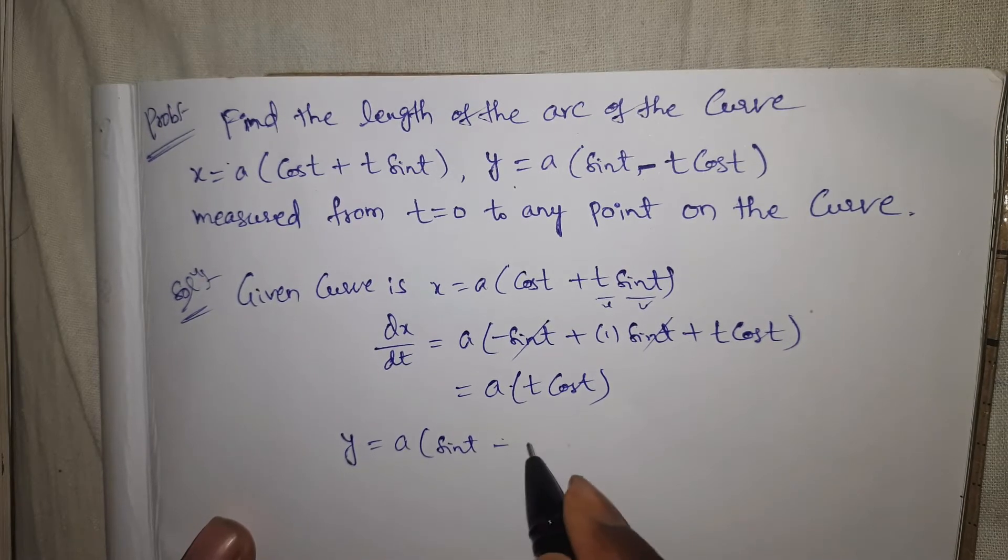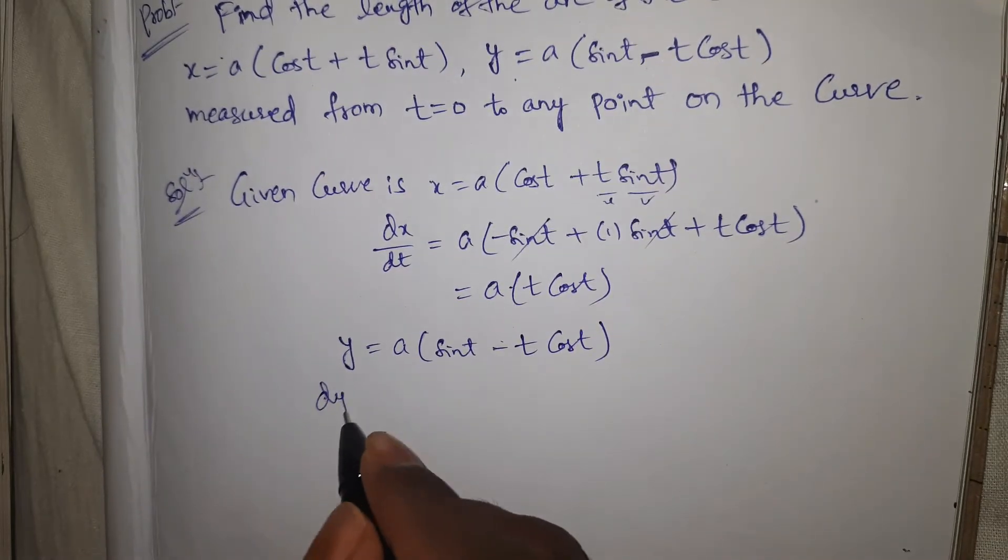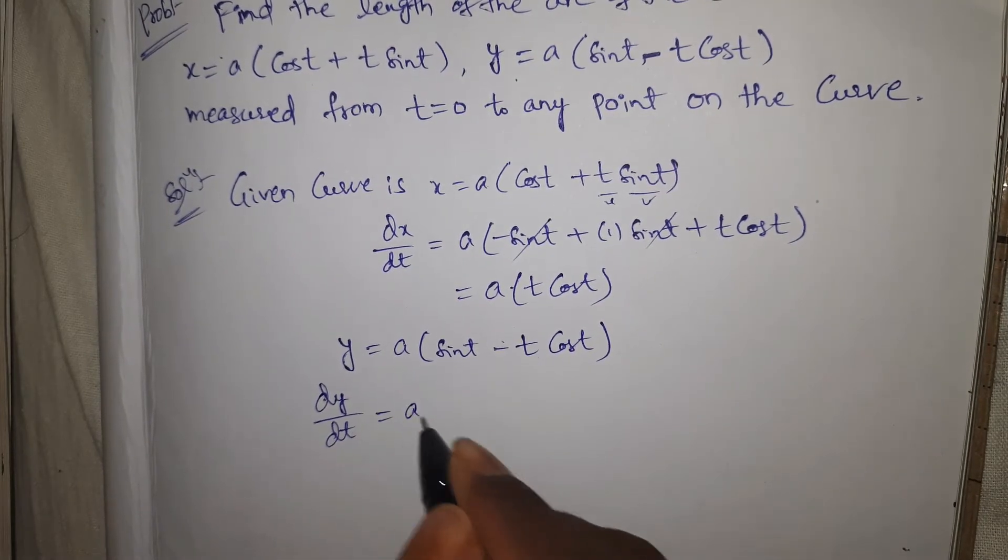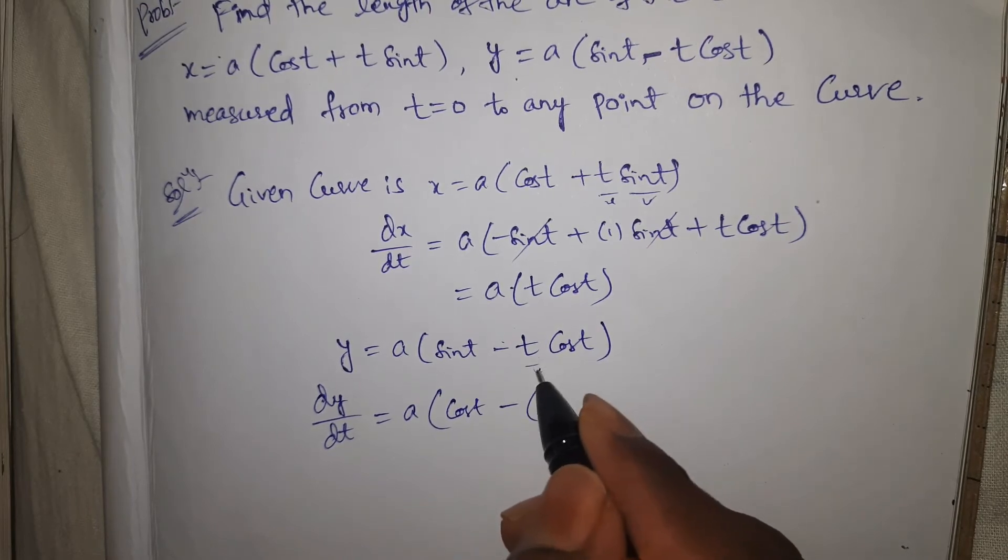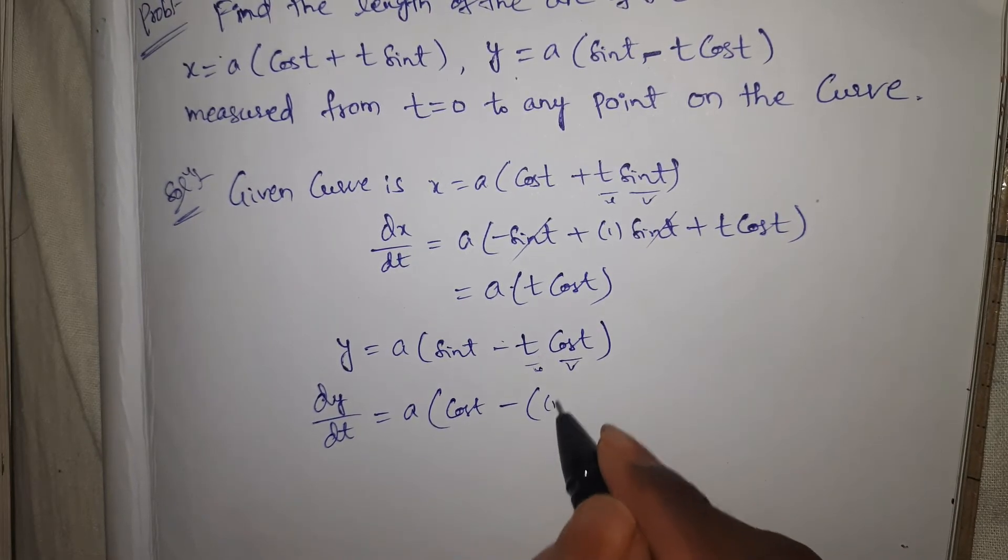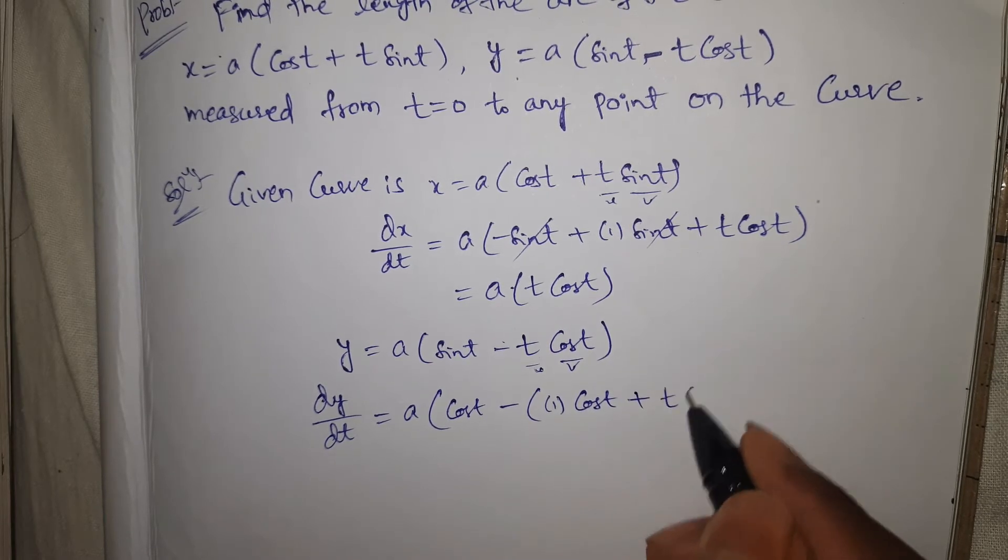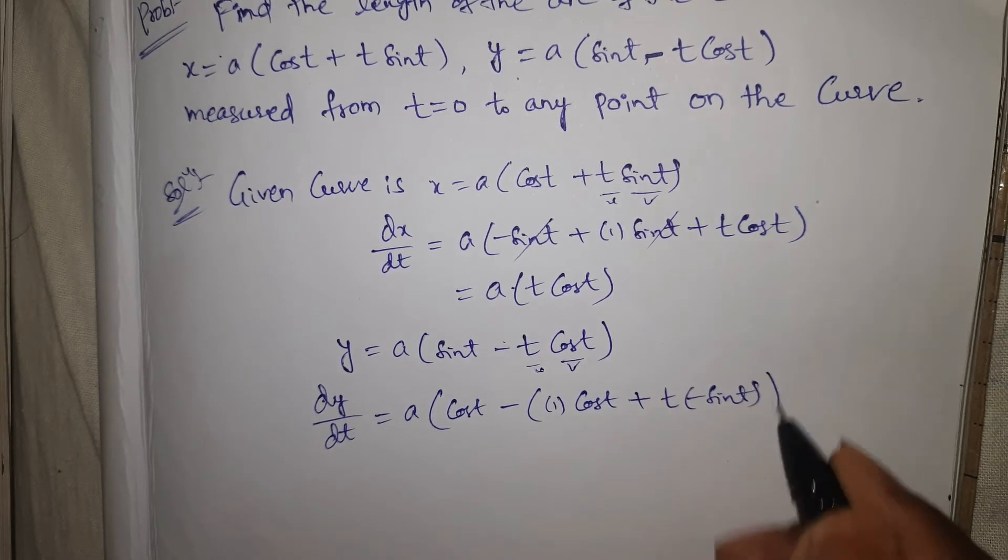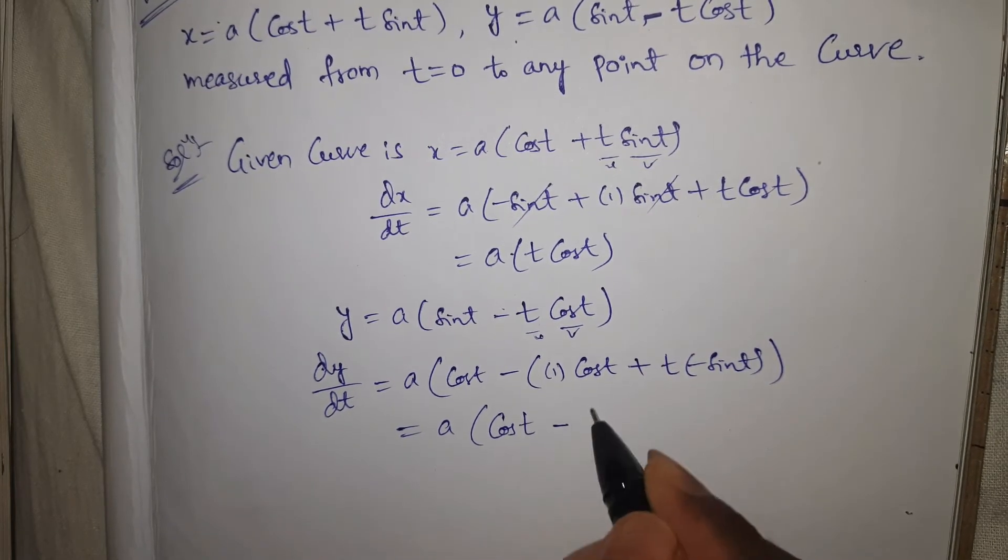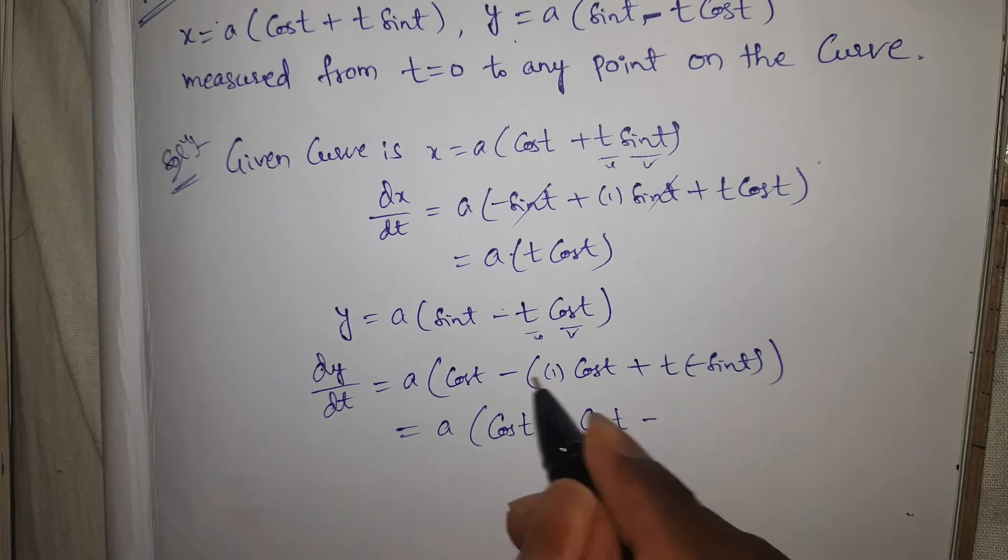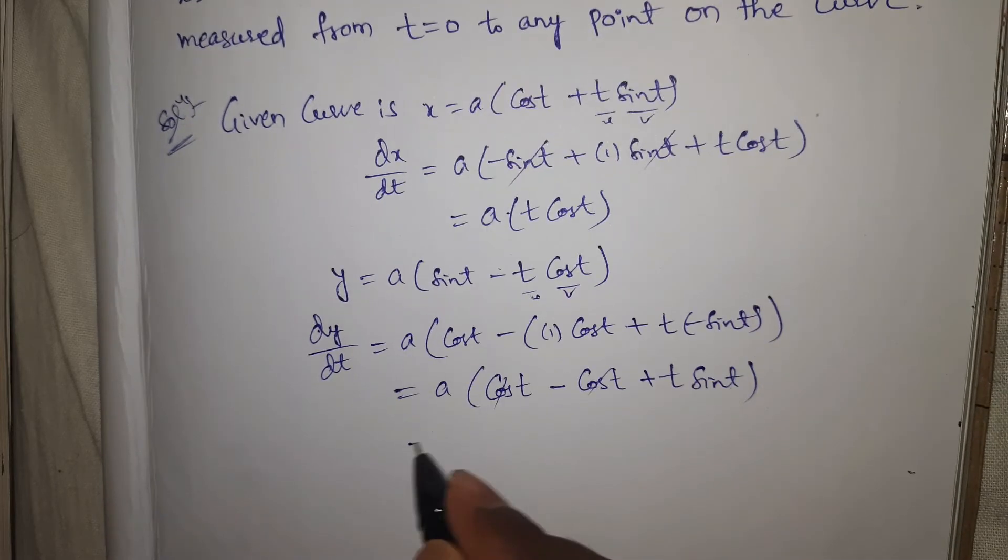Next, y = a(sin t - t cos t). dy/dt = a(cos t - (cos t + t(-sin t))). Cos t terms get cancelled, so dy/dt = a(t sin t).